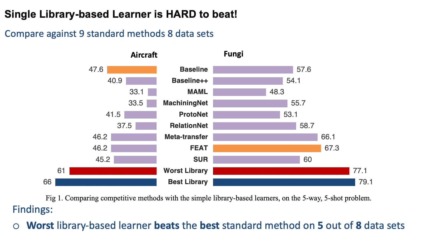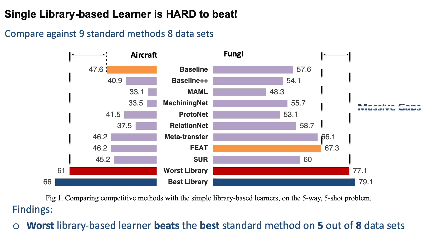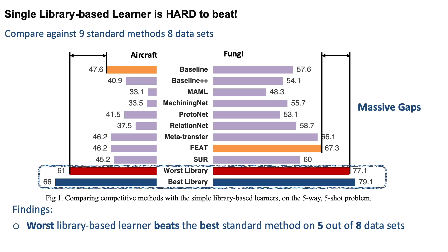Taking this five-way five-shot problem example, here we show the performance on the aircraft dataset and fungi dataset. There is a massive gap between the worst library-based learner versus the best standard method. On aircraft, it's 61 versus 47. On fungi, it's 77 versus 67.